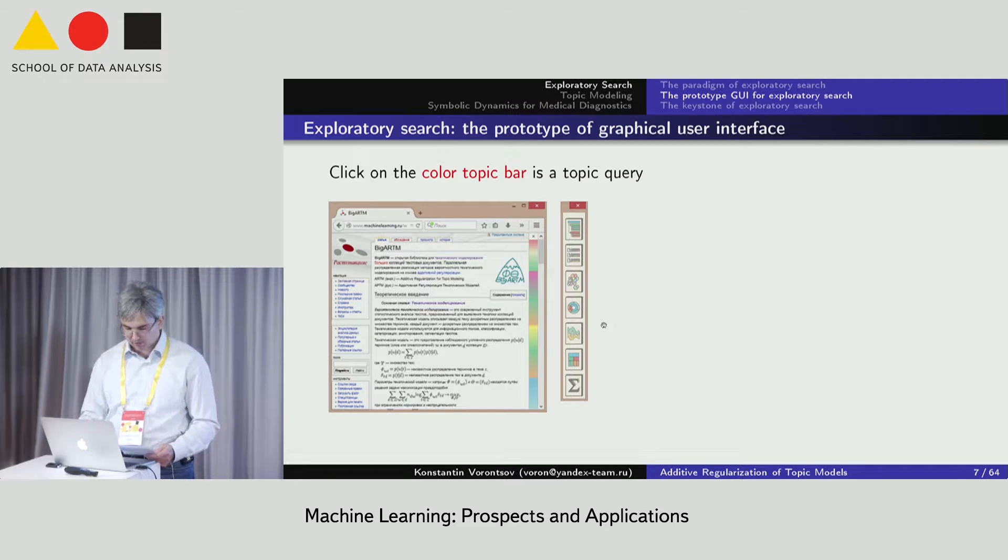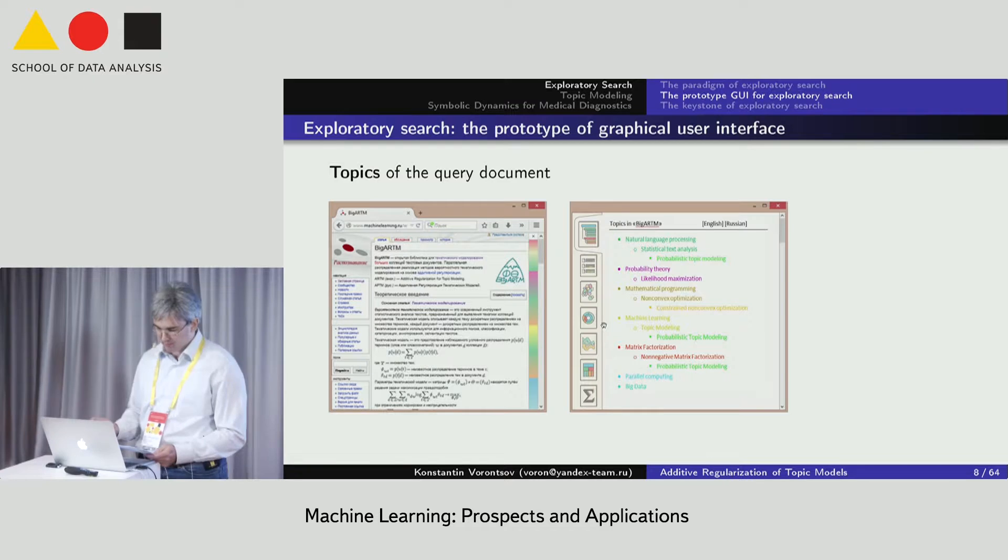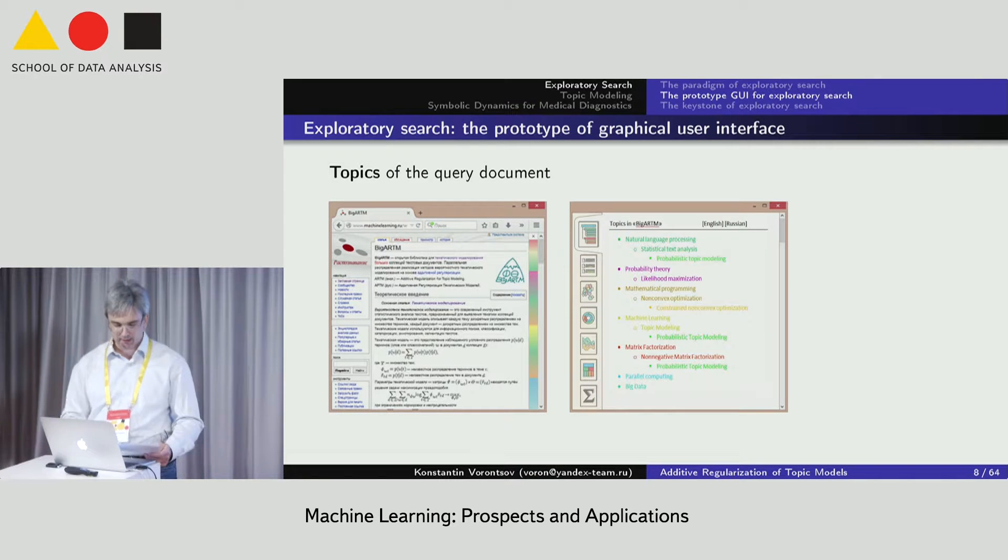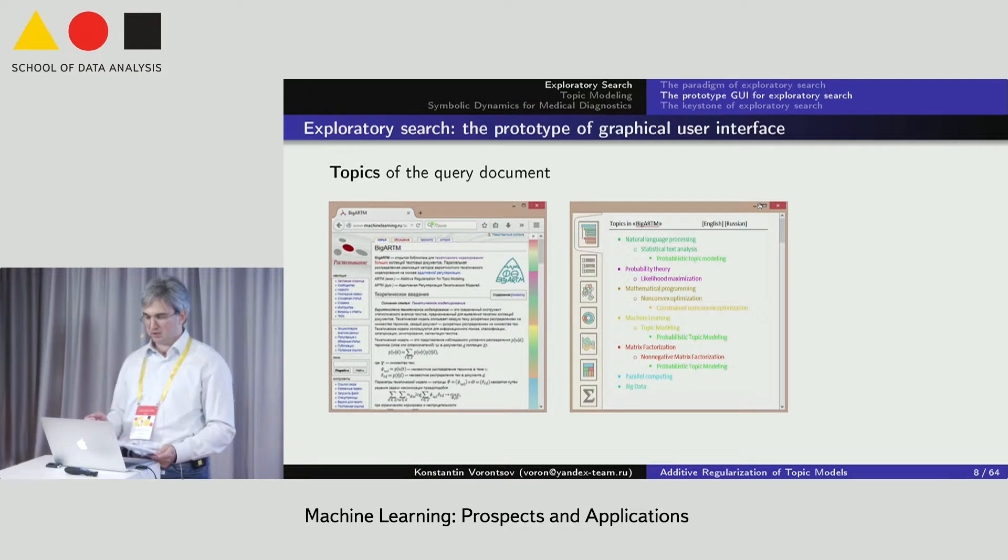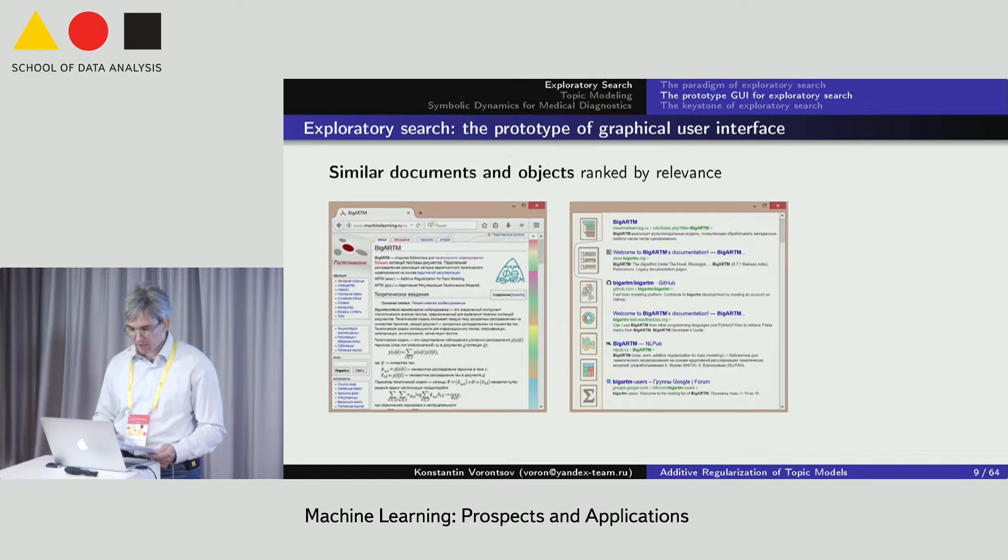First, the user learns what topics the text query contains and how they are nested into the global topical hierarchy. At that moment, the user can choose some of these subtopics in order to refine his query. Of course, our user can browse a search result page of topically similar documents. This view is quite familiar to any user of modern full text search systems.